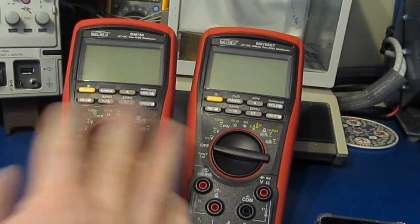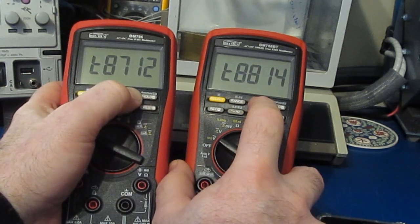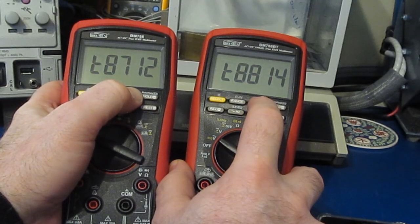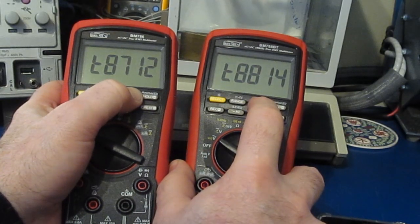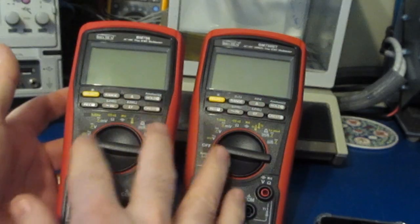If I go ahead and power this up, you can see these are both the Bluetooth firmware. On the left, you can see it's the 87 and it's version 12. On the right, it's the 88 and it's version 14. So both meters have the latest firmware, and this is the firmware that Dave's been testing with.